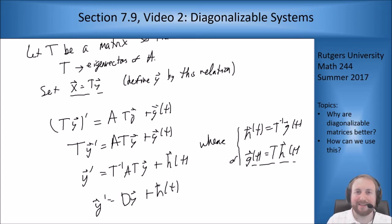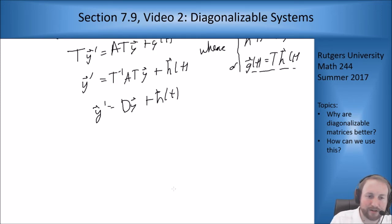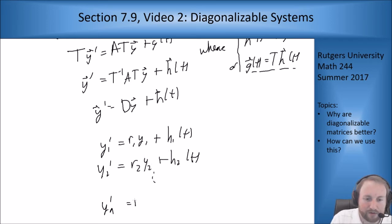But then T inverse AT is diagonal, so this is y prime equals Dy plus h of t. But now I can write this out as different components. Because D is diagonal this becomes y1 prime equals r1 y1 plus h1 of t, y2 prime equals r2 y2 plus h2 of t, and on down to yn prime equals rn yn plus hn of t, where I've said that D is going to be r1 to rn on the diagonal.